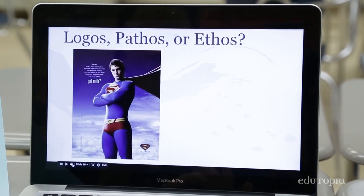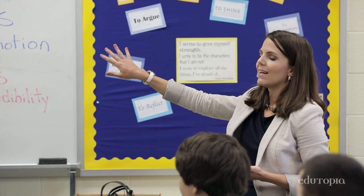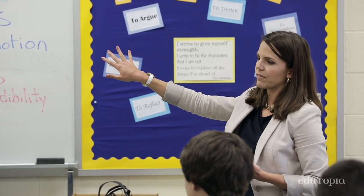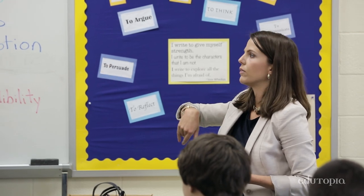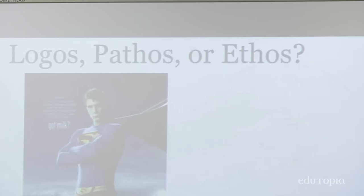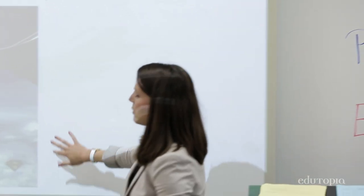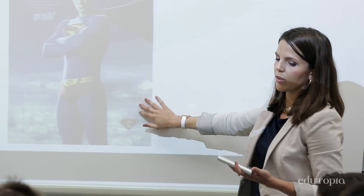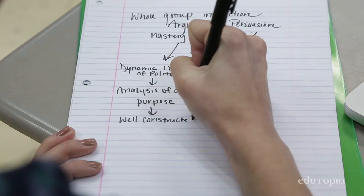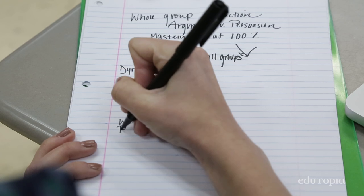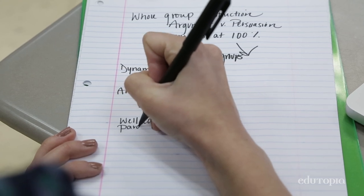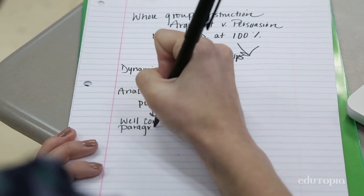Logos, pathos, or ethos — we're looking at this beautiful advertisement of Superman. What is the most prominent persuasive element you see here? Let's have our higher level group, since they've demonstrated through this exit ticket that they can definitely identify those three things in what they're reading, move them up to author's purpose.